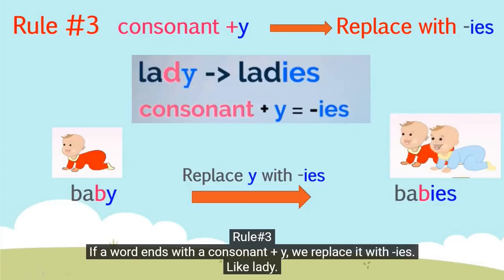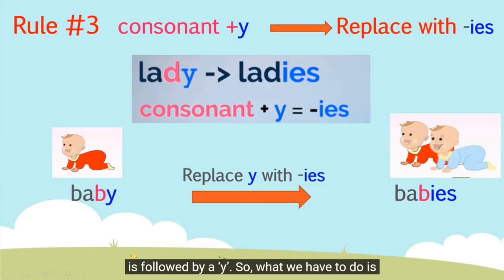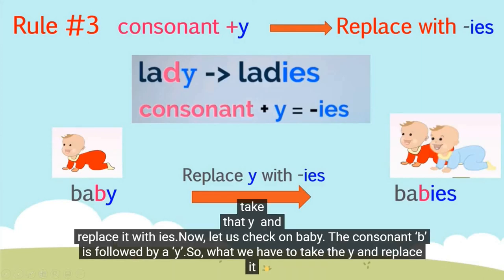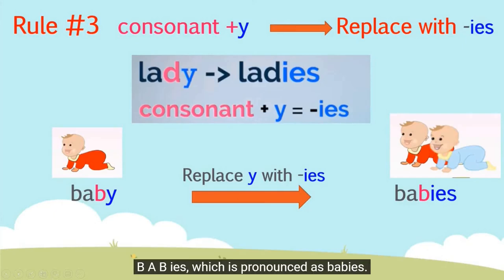Rule number three: if a word ends with a consonant plus Y, we replace it with IES. Like lady — the consonant D is followed by a Y, so we take away the Y and replace it with IES. Now let's check baby — the consonant B is followed by a Y, so we replace the Y with IES and it becomes B-A-B-I-E-S, which is pronounced babies.